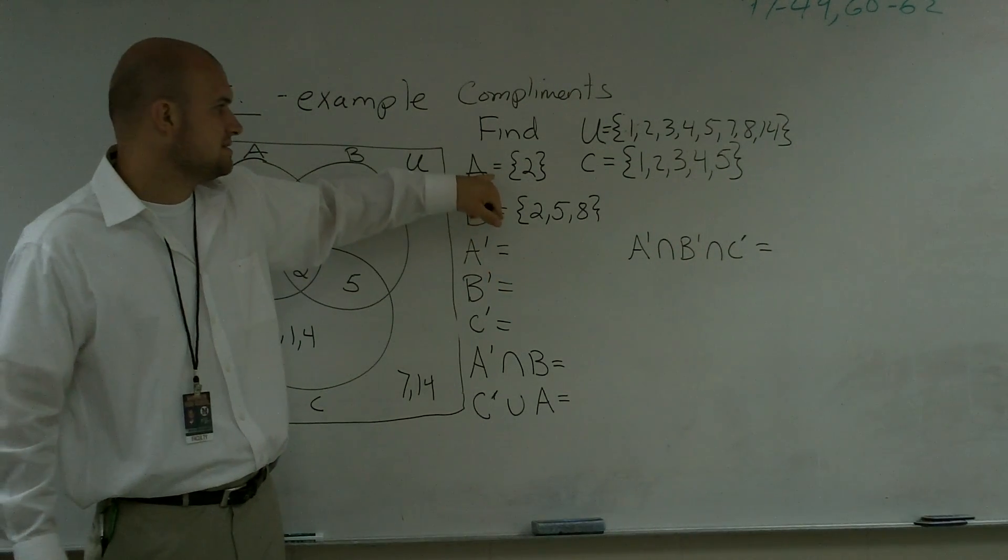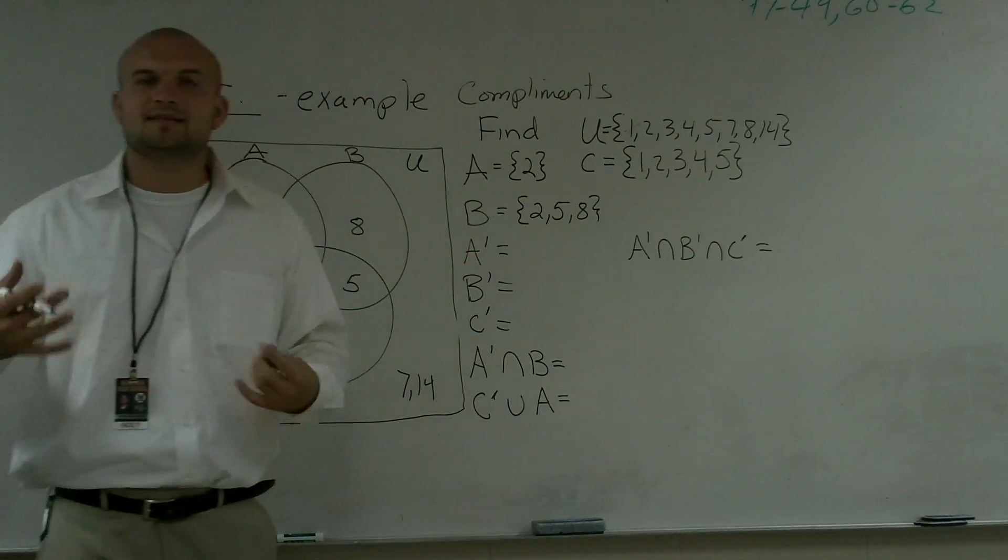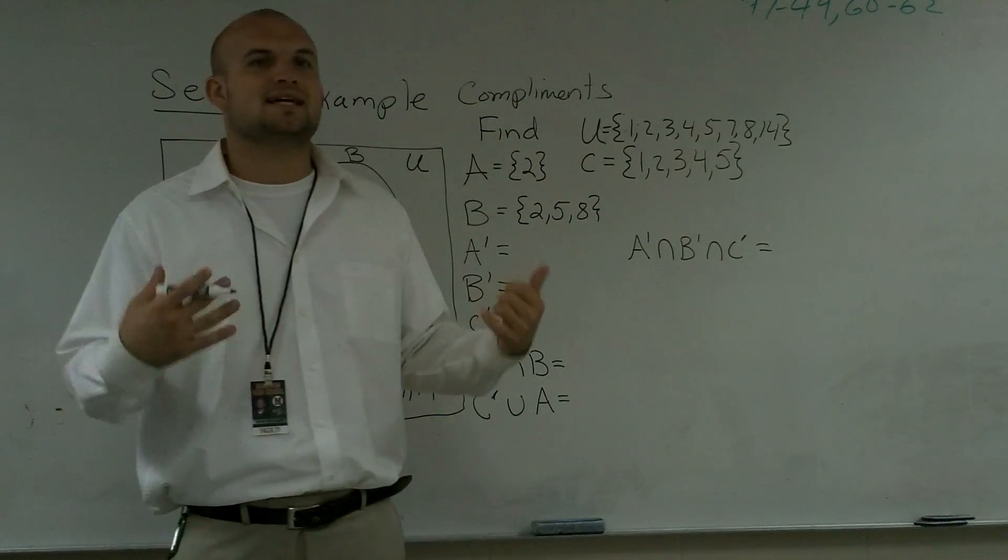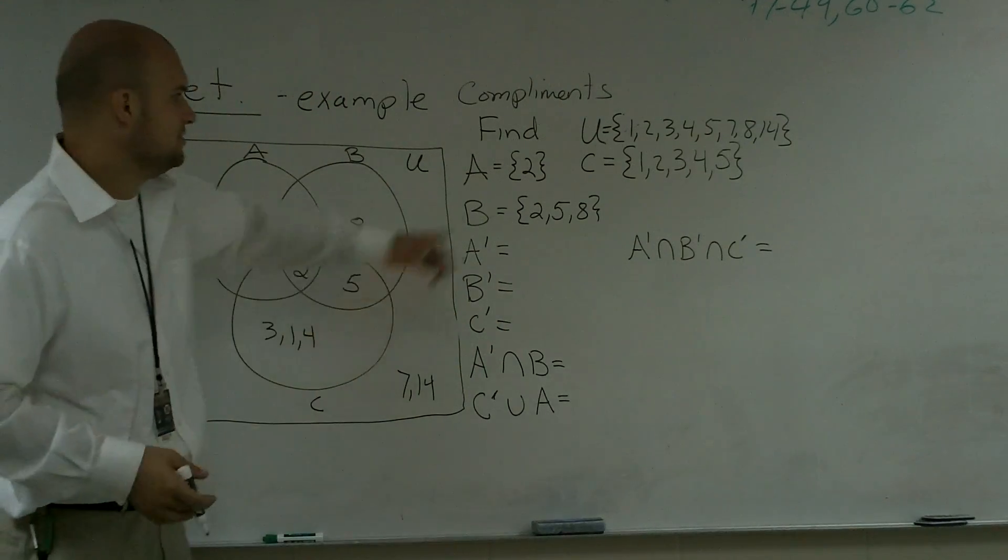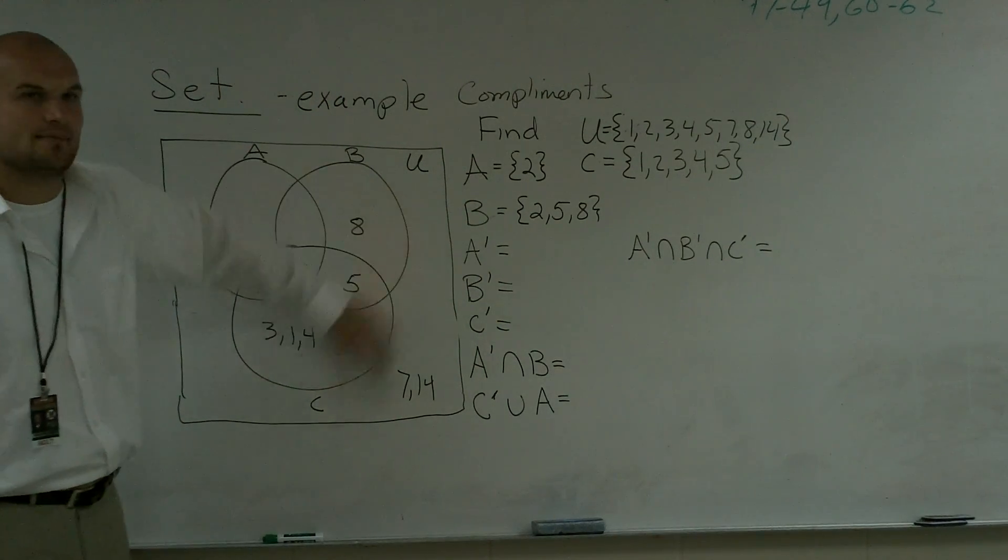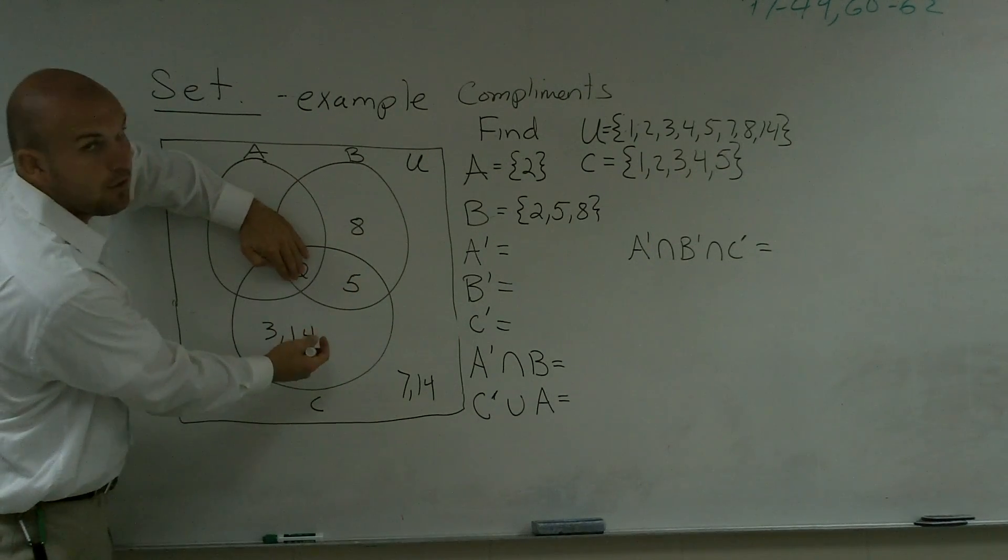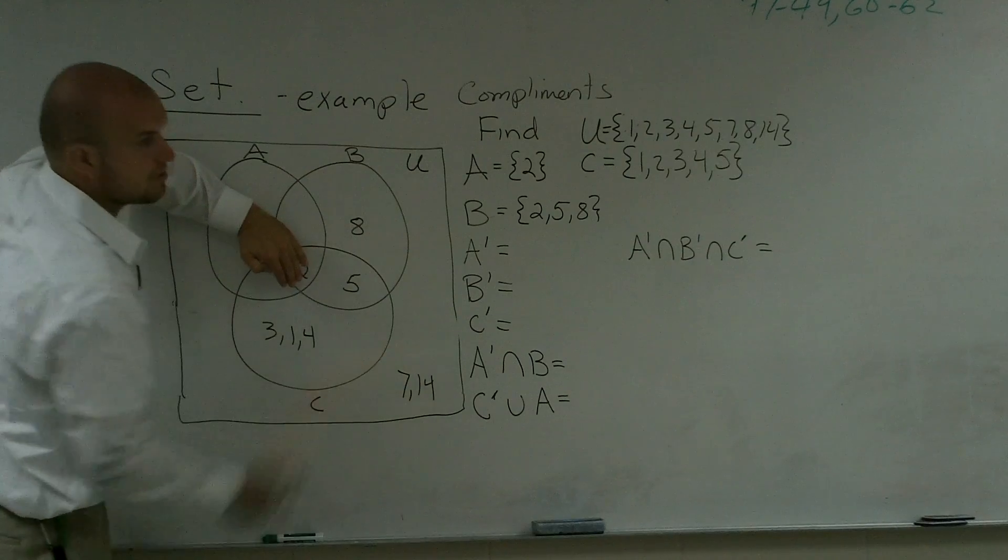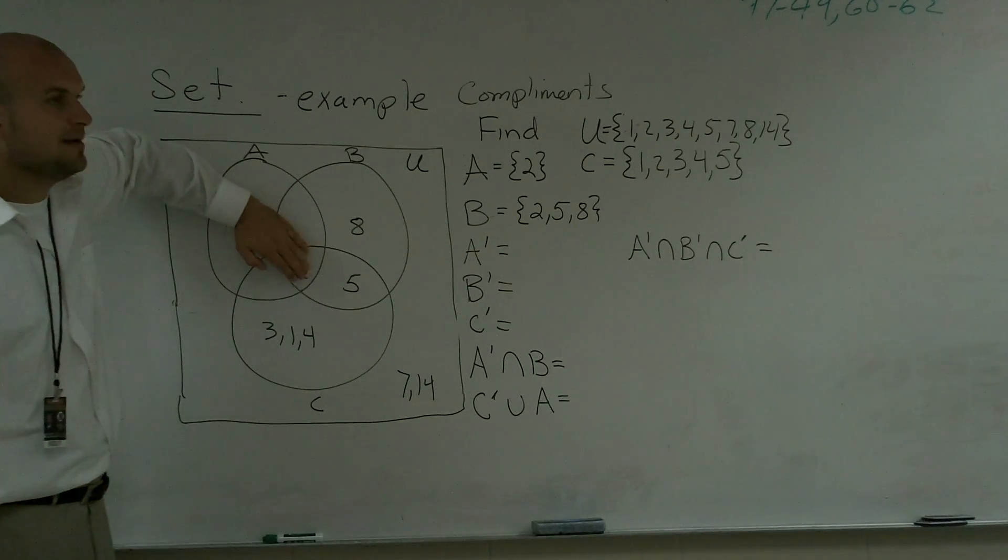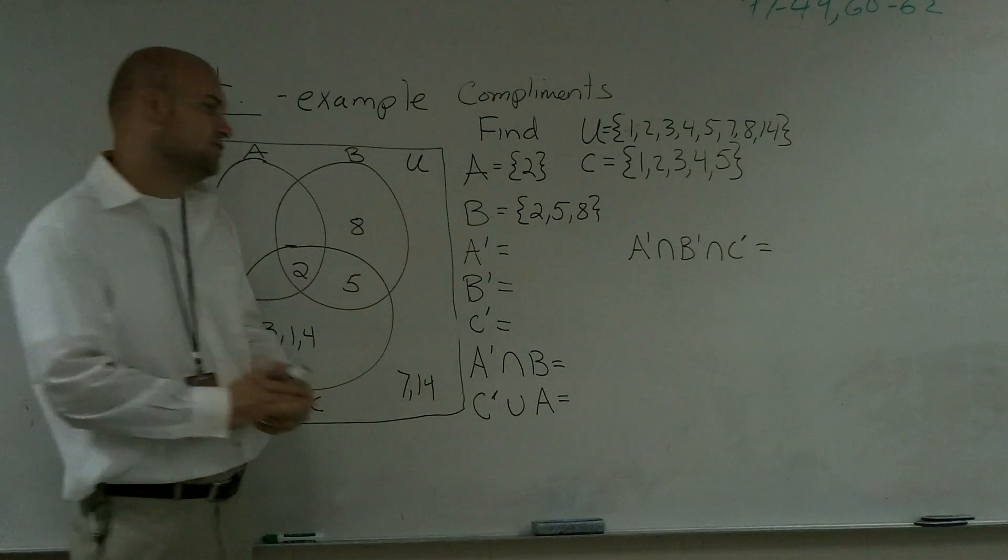If I was going to say A is 2, the complement of A would be everything that's in the universal set that's not in A. So if I go and look up here, what is everything that's not in my circle A but is still in my universal set? Well, we're going to have 8, 5, 1, 3, 4, 7, and 14. So the complement means everything that's not in your original set but that is still in the universal set.